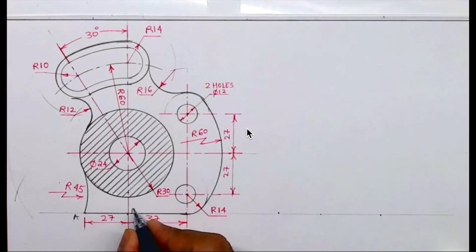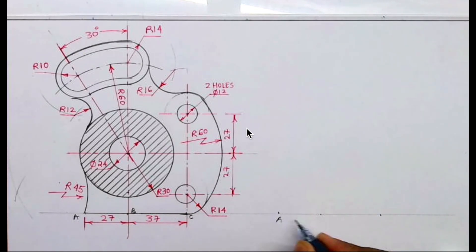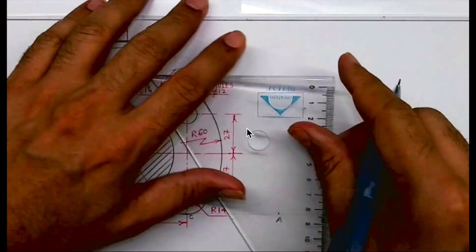I will write this as A, B, and C. So this is A, B, and C. Now from B we can draw a vertical line.